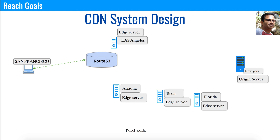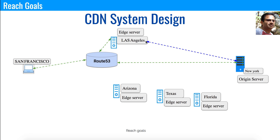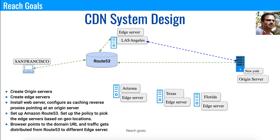When a customer in San Francisco hits traffic, it goes to Route 53, which determines the closest location — Los Angeles — and serves content from there. You should also notice the blue line connecting Los Angeles to the origin server: the web server installed at the edge server fetches the latest content from the origin server and caches it locally, ensuring you always have fresh content. There are multiple algorithms to implement content refresh from the origin server to the different edge servers.